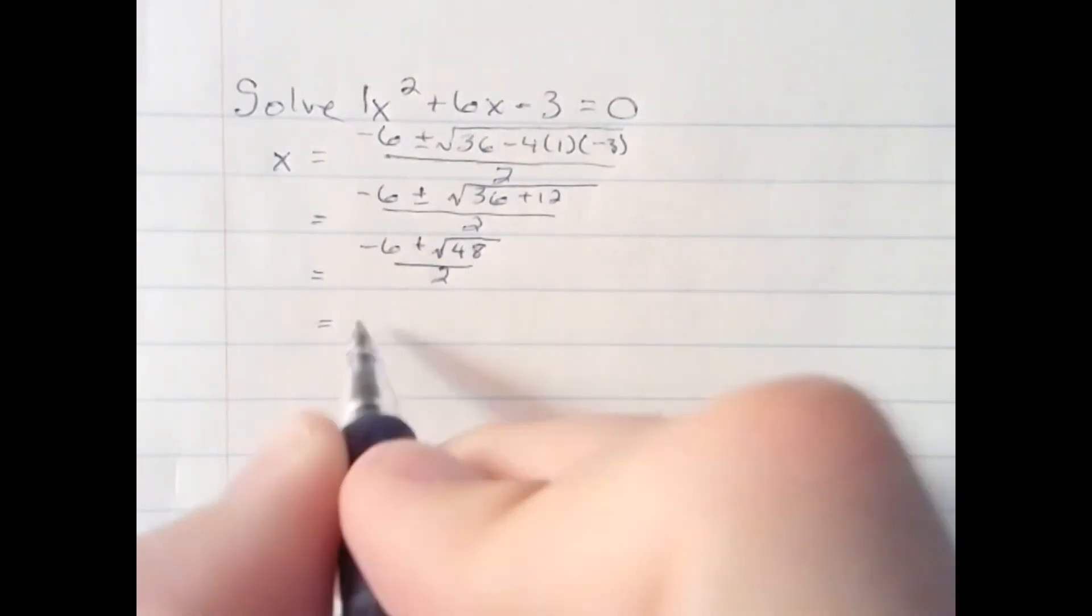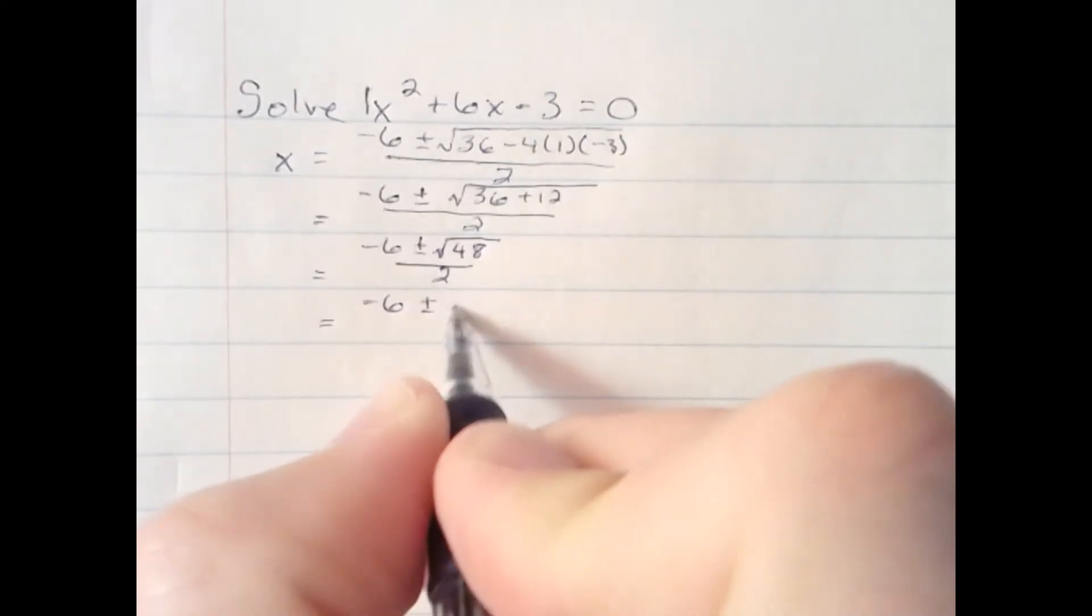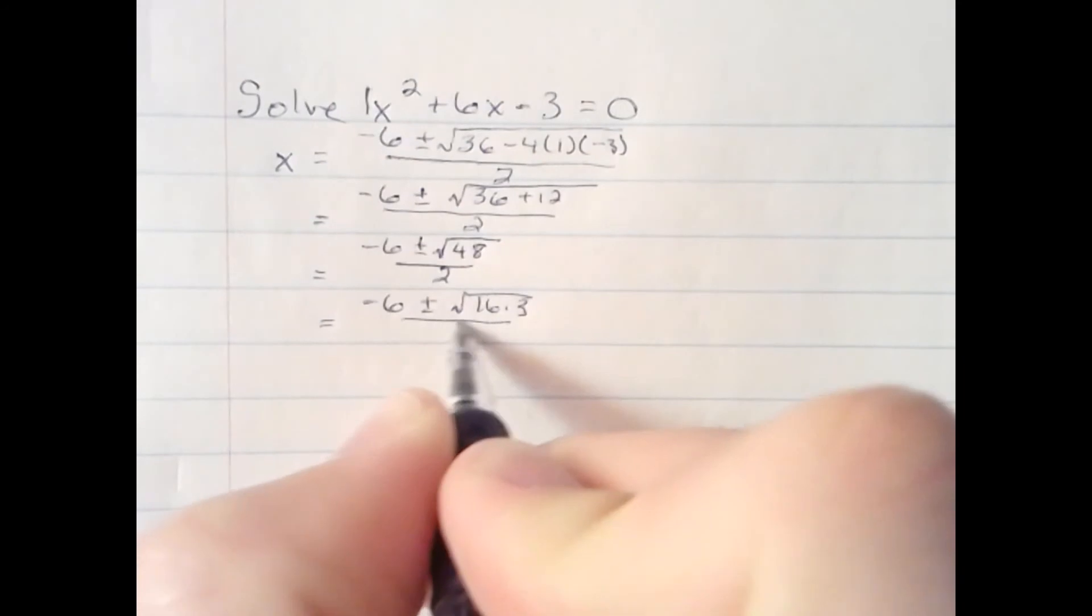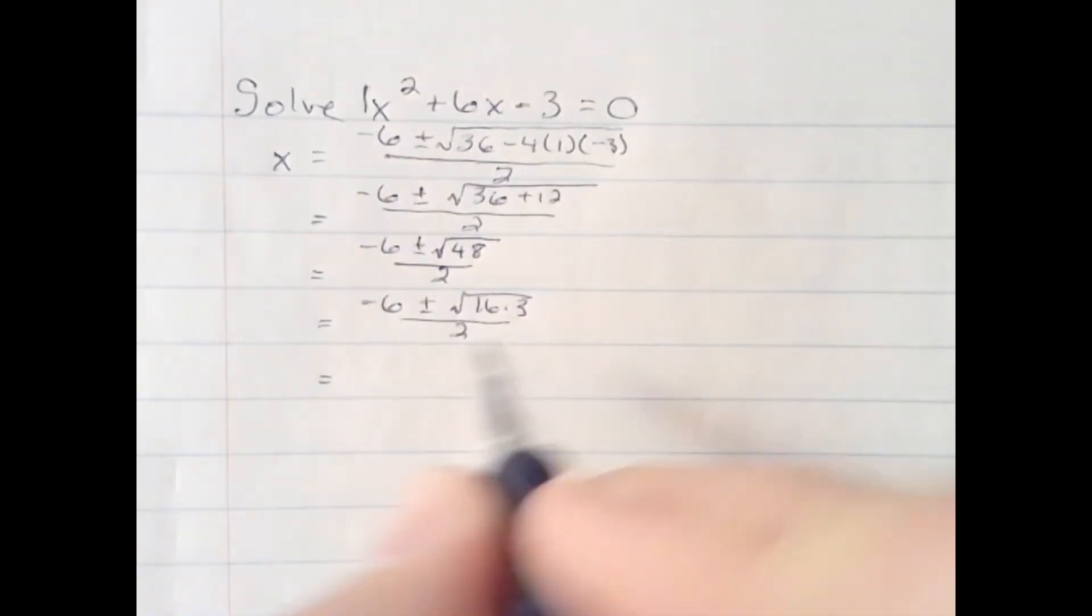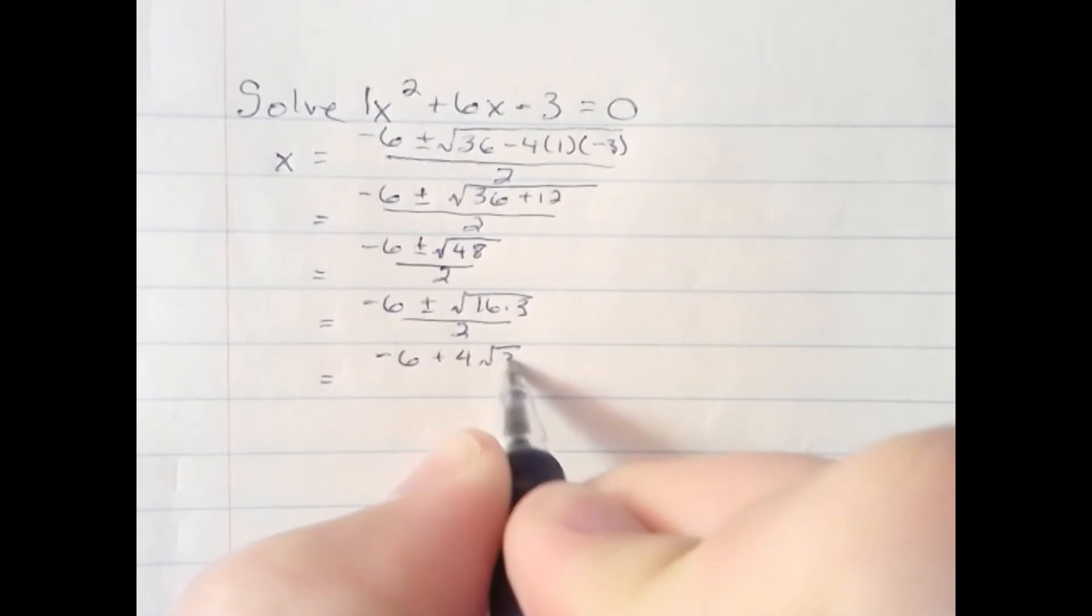We can break 48 down into 16 times 3. We want the largest perfect square as possible. Square root of 16 is 4, radical 3.